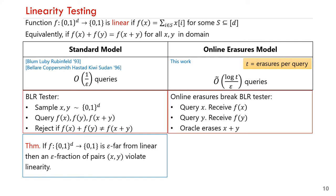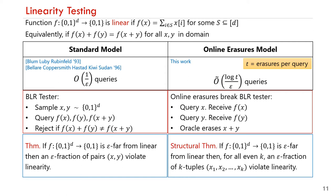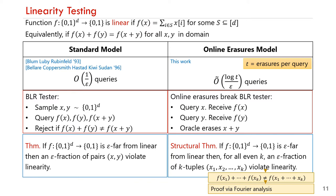It is very easy to see that the BLR tester will break in the presence of online erasures. The tester could query x and y and receive their values; however, once the oracle answers with f(y), it can erase x+y, and thus the tester would never see a violation to linearity. As a result, we introduce a new linearity tester which works in the presence of online erasures. Its analysis will rely on the following structural theorem: if a function is epsilon-far from linear, then for all even k, an epsilon fraction of the k-tuples (x_1, ..., x_k) violate linearity, meaning f(x_1) + ... + f(x_k) ≠ f(x_1 + ... + x_k). Notice that the theorem of Bellare et al. is a special case for k=2. The proof follows via Fourier analysis using similar ideas.